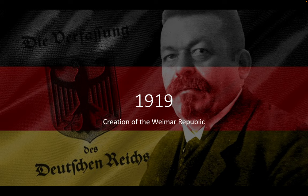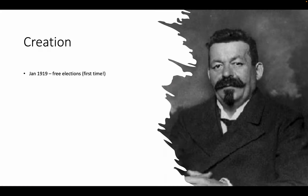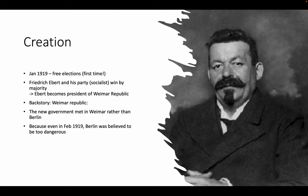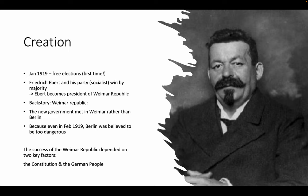In 1919, the Weimar Republic was created — the first time Germany had ever been democratic. In January 1919, there were free elections for the first time in German history. Friedrich Ebert and his socialist party won by majority, and Ebert became the president of the Weimar Republic. The new government met in Weimar rather than Berlin because Berlin was considered too dangerous — too many protests. The success of the Weimar Republic depended on two key factors: the constitution and the German people's reaction to it. It was called the Weimar Republic simply because the government met in Weimar.